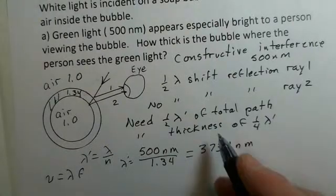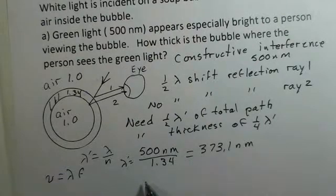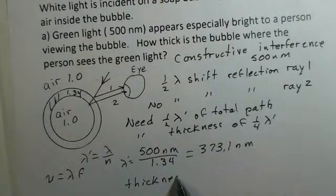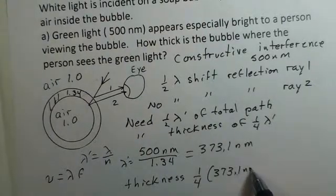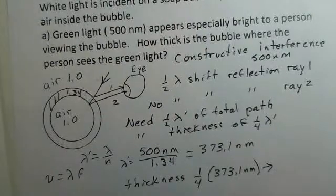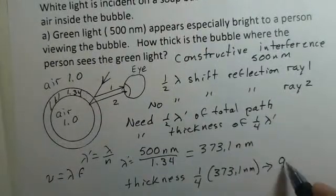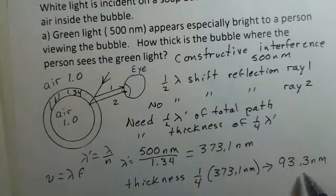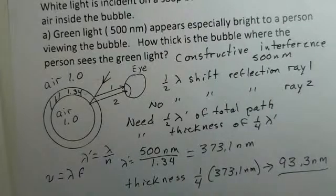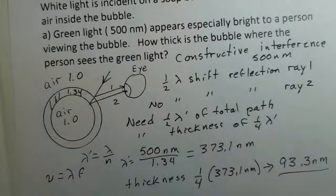The thickness is one quarter lambda prime. One quarter of 373.1 nanometers, and I calculated 93.3 nanometers. That would be the thickness of our soap bubble, the thickness of the thin film of the soap bubble that would cause a condition of green light having constructive interference.